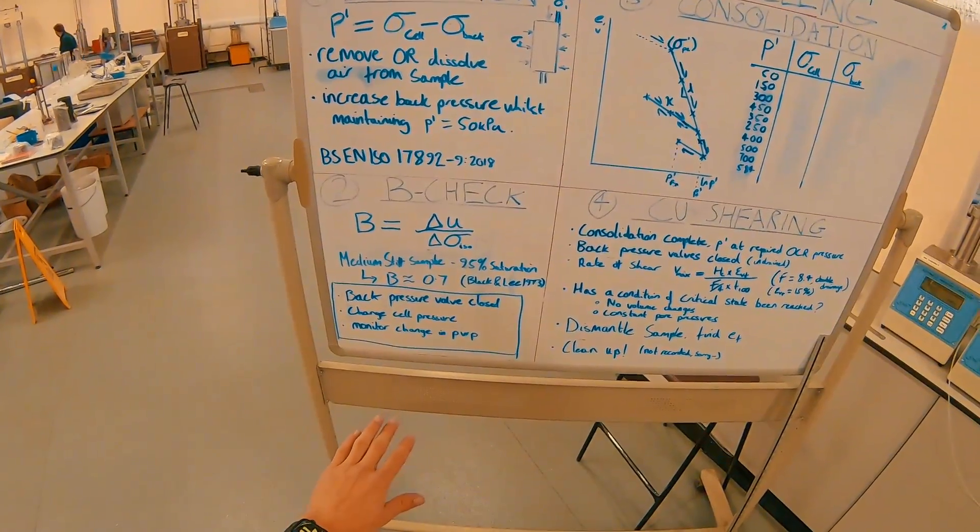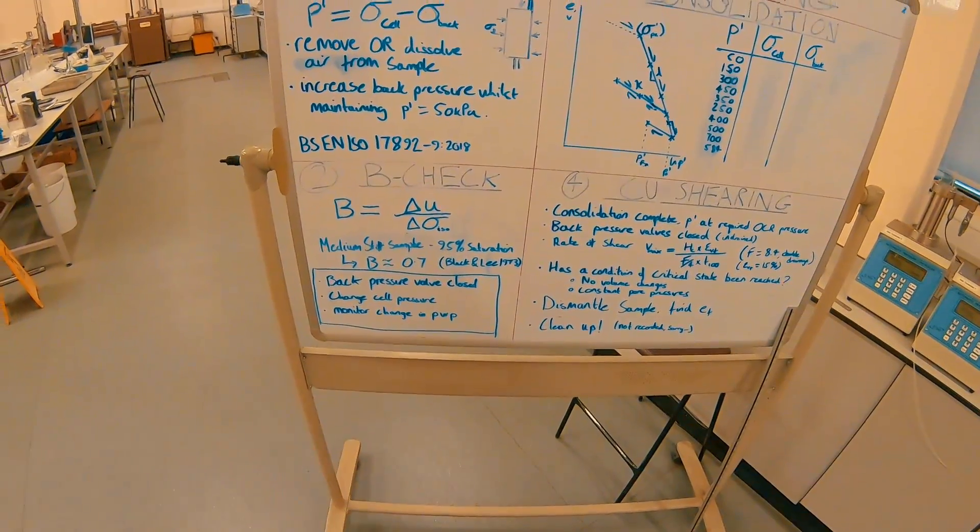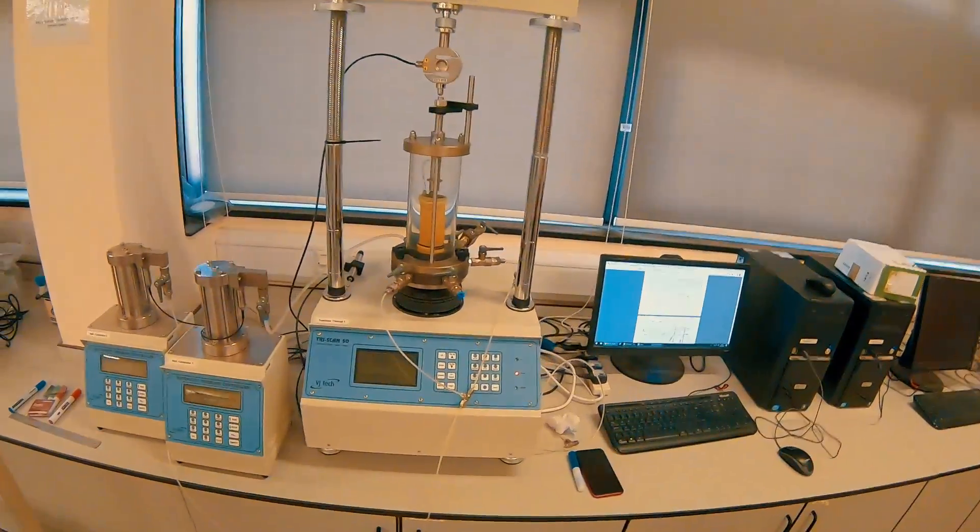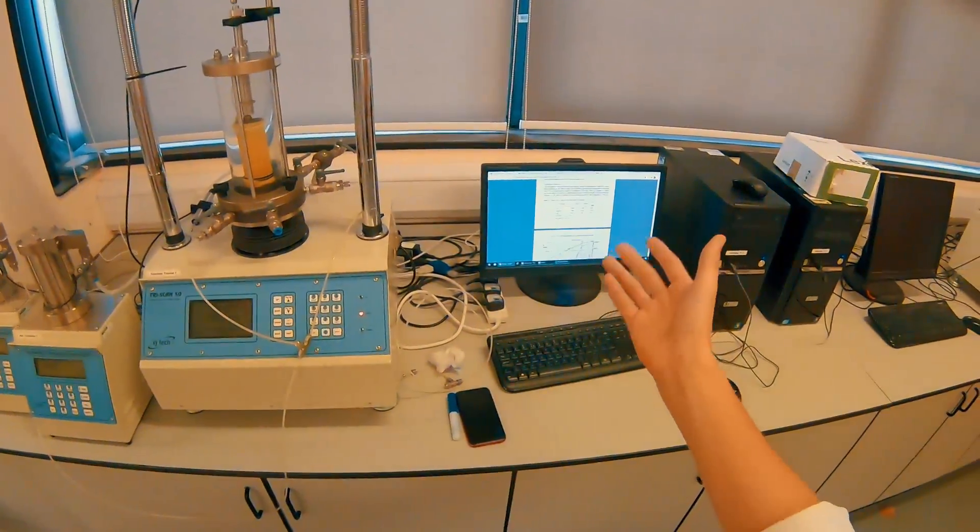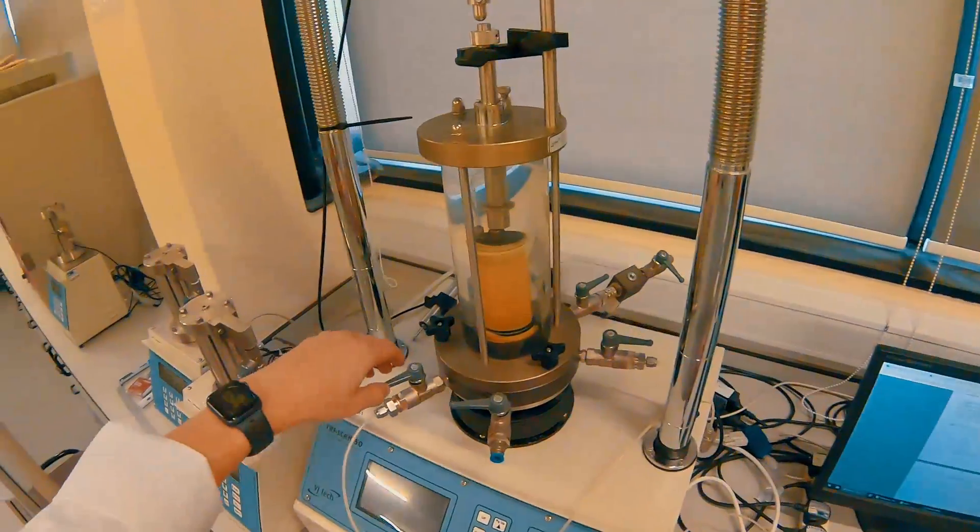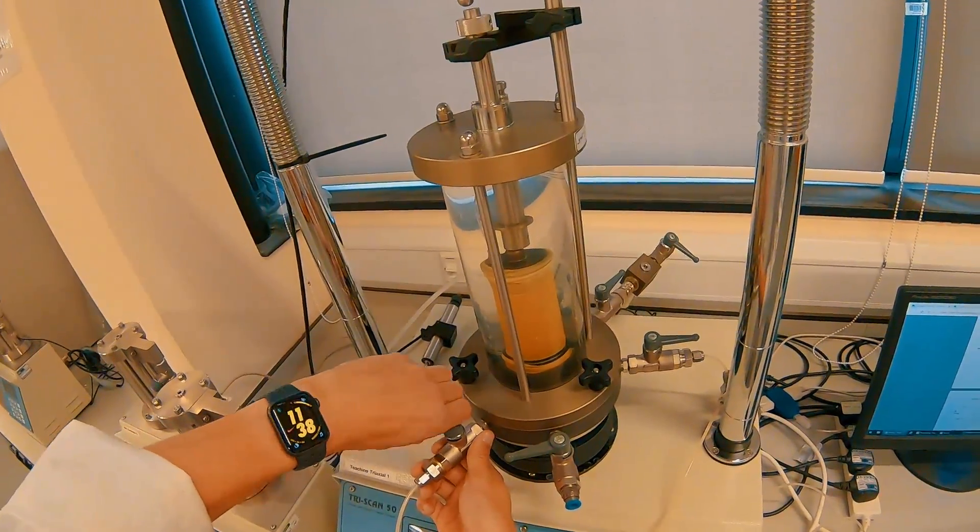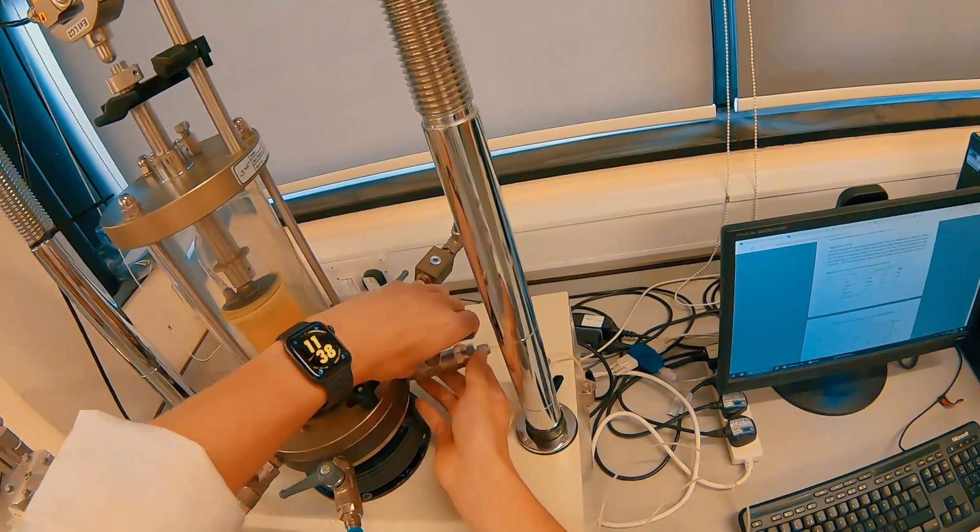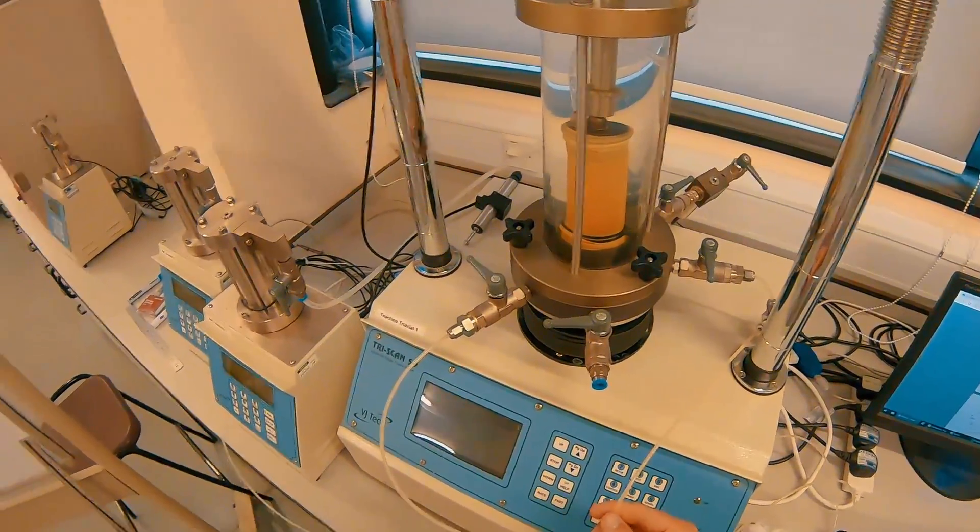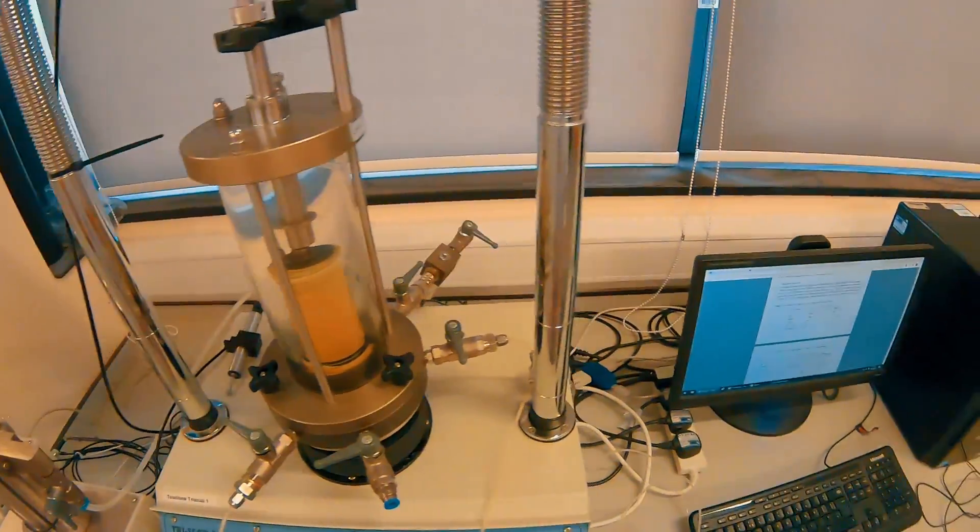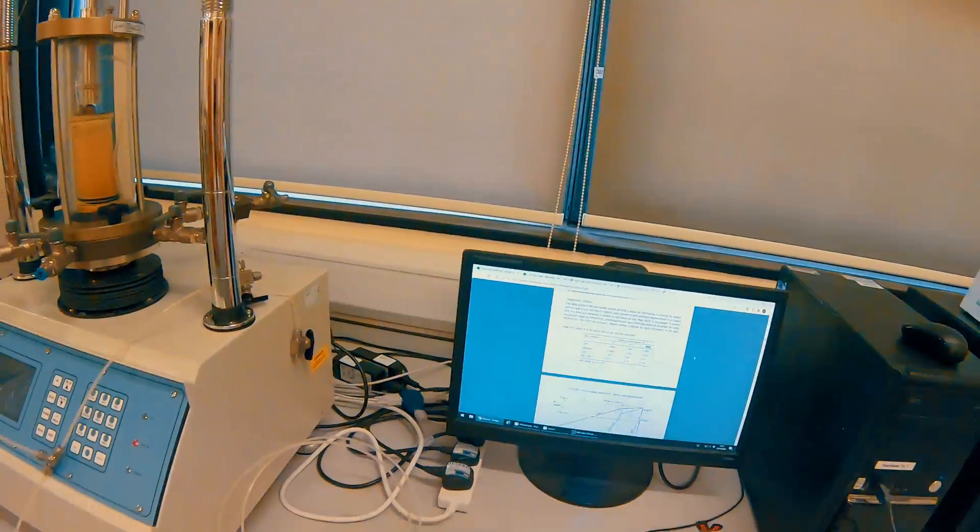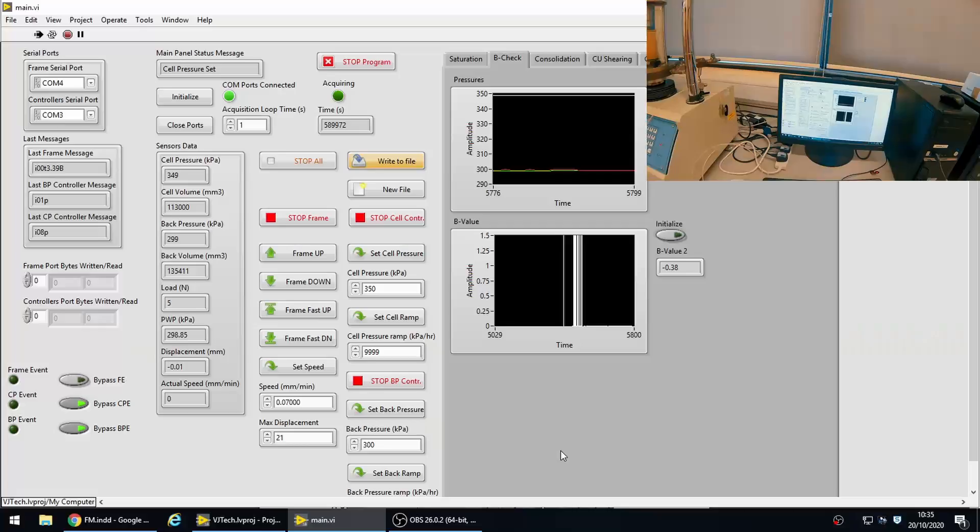I put on the board here just the three steps in order to do a B check: make sure the back pressure valves are closed, change the cell pressure, and then monitor the change in pore water pressure over a period of 10 minutes as stipulated by the standards. First things first, close the back pressure valves—back pressure valves are denoted by the fact they're on the smaller of the pipes. Now we have those closed.